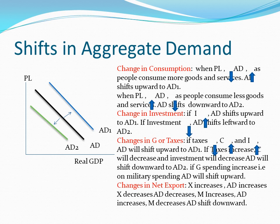When there is a change in consumption: when the price level decreases, the aggregate demand curve increases as people consume more goods and services, so the aggregate demand curve shifts from AD to AD1, or rightward. In the reverse situation, when the price level increases, aggregate demand decreases as people consume less, so the aggregate demand curve shifts downward from AD to AD2. For changes in investment: if investment increases, aggregate demand shifts upward from AD to AD1; if there are fewer investment opportunities or investment is down, the aggregate demand curve shifts leftward.